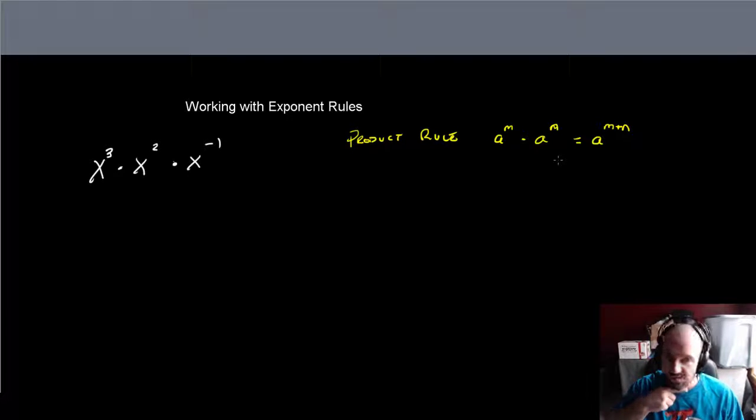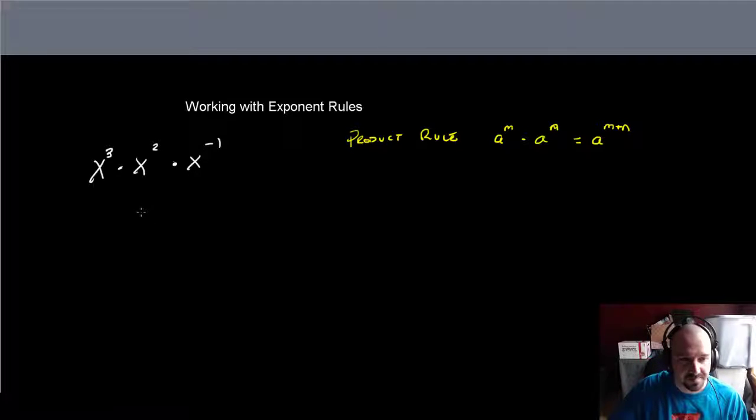So what we're going to do here is we can just simply add all these up, so because x is the base of each one of these, this is x to the third plus 2 plus negative 1. And if you work through this, this is 3 plus 2 is 5, plus negative 1 is 4, so this would be x to the fourth.